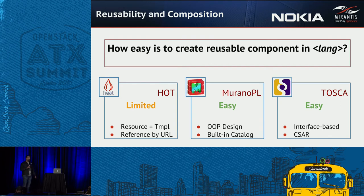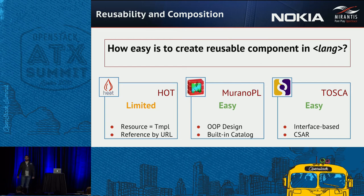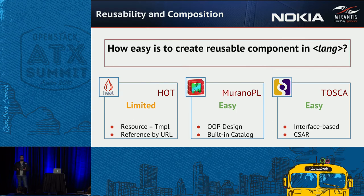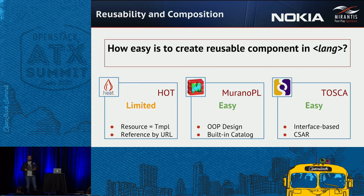MuranoPL is quite easy for implementing reusable components because of object-oriented design — you can upload libraries to the catalog, like dynamic libraries, and share them publicly with anyone in the community or inside your cloud. Tosca is close to Heat but slightly different: you have interfaces so you can abstract different pieces behind an interface with completely different implementations. Each implementation is most probably something written in Python. In MuranoPL all business logic is MuranoPL itself; in Tosca, business logic is in another language. Tosca also has a way to create reusable components via CSAR — an archive of your application.